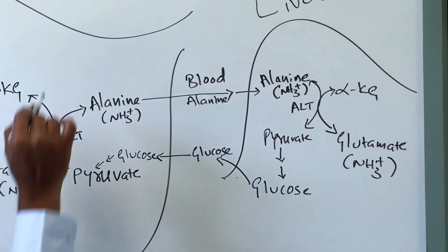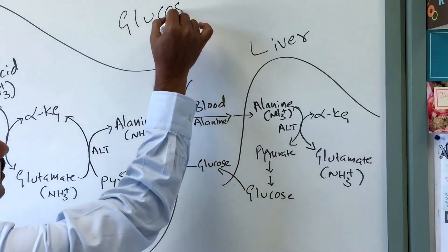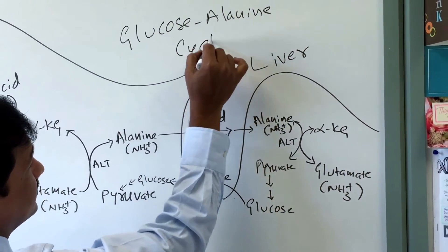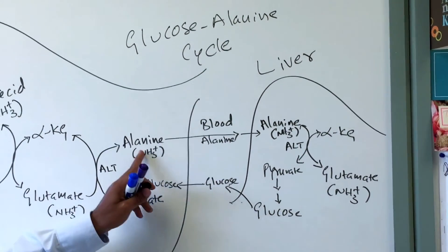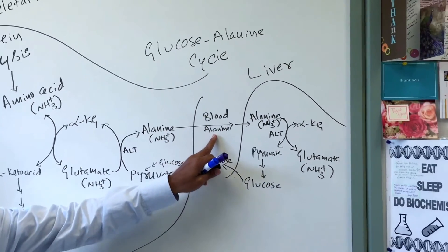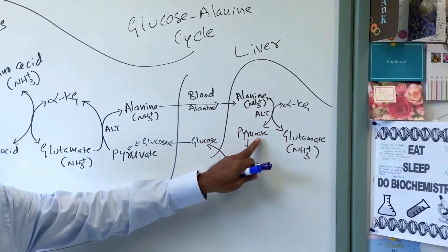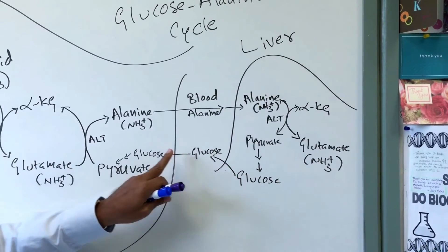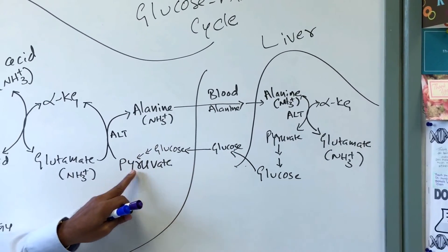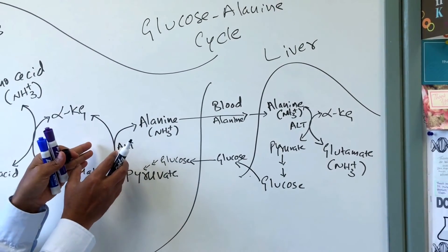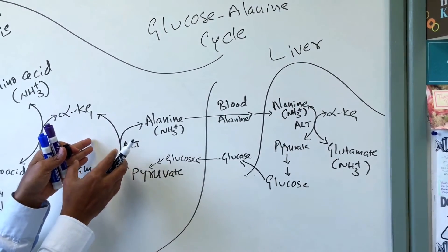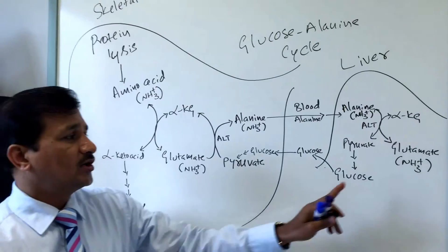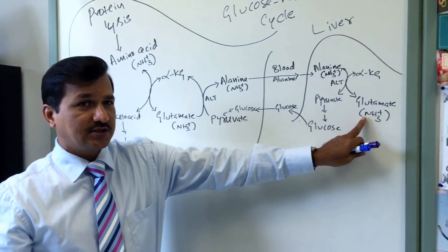This completes the glucose-alanine cycle. Alanine moves out of skeletal muscle to the liver, where it is converted to pyruvate, then to glucose. Glucose enters the blood, is taken up by skeletal muscle, undergoes glycolysis to pyruvate, and pyruvate is transaminated back to alanine.